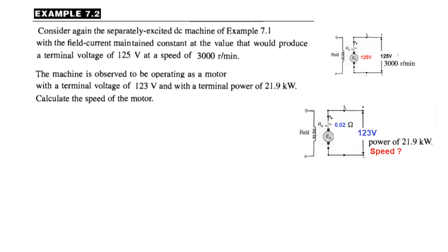Now this portion is slightly confusing. When we talk of terminal voltage, we actually mean this voltage, but it is clarified if you look at the question of 7.1. What we need to find is the machine is observed to be operating as a motor with a terminal voltage of 123 volt at a power of 21.9 kilowatt, and we have to calculate the speed of the motor.